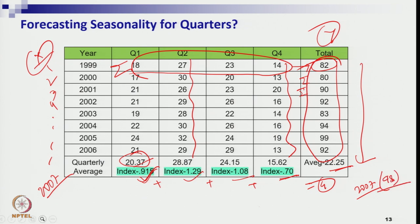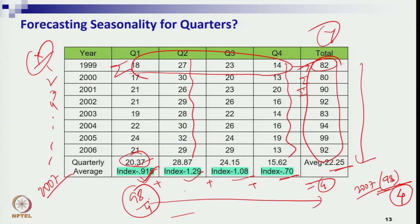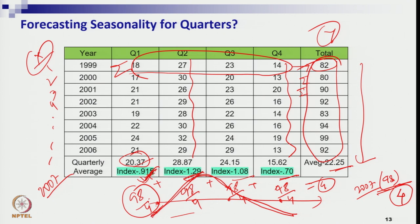But the annual forecast is not the final value. You divide it by 4 because there are 4 quarters, giving you equal predictions of 24.5 for each quarter. That is the de-seasonalized straight-line prediction. You then multiply by the corresponding index — so it will fall in quarter 1, go up in quarter 2, and so on.